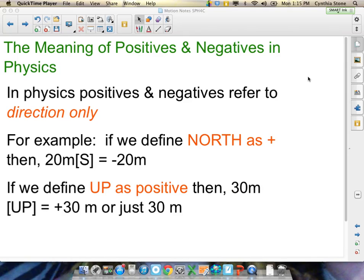If we say up is positive, then 30 meters up is plus 30. You'll see the plus there, plus 30, or just 30 meters, because often with positives we don't bother writing the plus. And so that's what positive and negative mean.